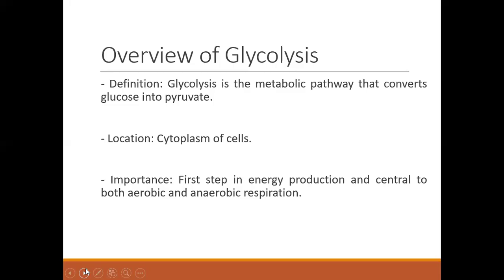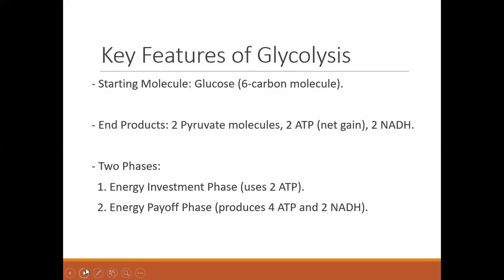What is glycolysis? How is glycolysis defined? It is the metabolic pathway that converts glucose, a six-carbon molecule, into pyruvate, a three-carbon molecule, generating energy for the cell to carry out its function. Glycolysis takes place in the cytoplasm of cells, and it is an important step in energy production. It is also central to both aerobic and anaerobic respiration.